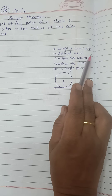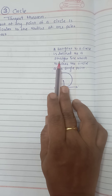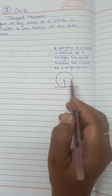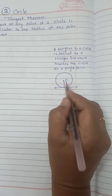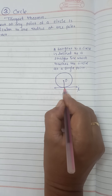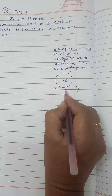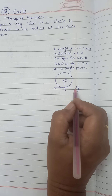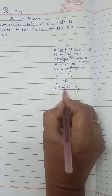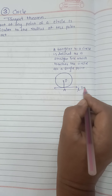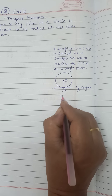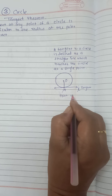A tangent to a circle is defined as a straight line which touches the circle at a single point. So this is a circle with center O, and this is a line L which is touching the circle at a single point, which we will call A. A line which touches the circle at a single point is called a tangent. So line L is a tangent and point A is known as the point of contact.